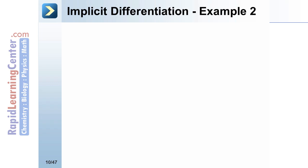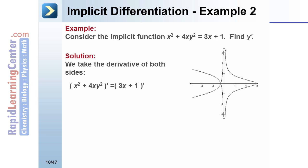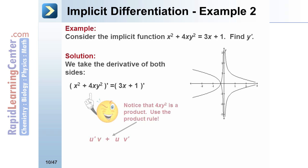Let's look at a second example of implicit differentiation. Consider the function x squared plus 4xy squared equals 3x plus 1 — you can see the graph shown below. We want to find the derivative y prime, so we take the derivative of both sides. Notice on the left side, 4xy squared is actually a product, so when finding its derivative we will need to use the product rule.